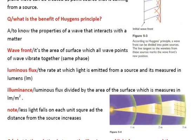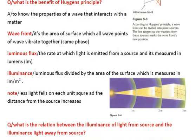We have a note here: less light falls on each unit square as the distance from the source increases. So here we can see a small square where the intensity of light is very high. But as the area increases, the intensity of light decreases.